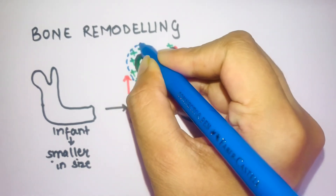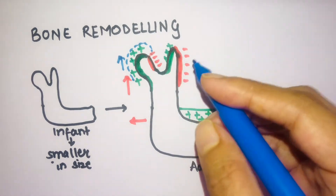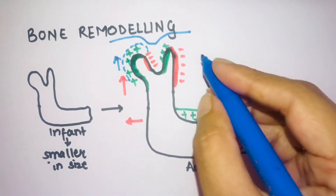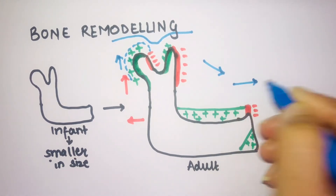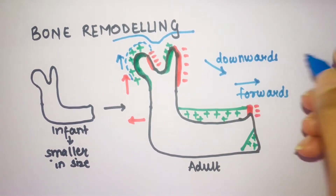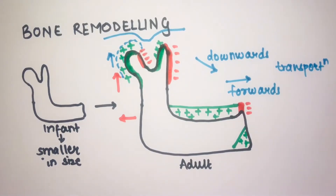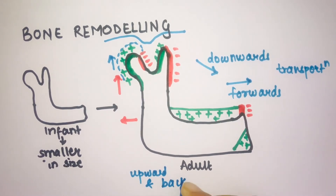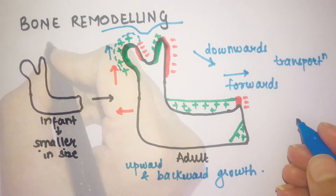Deposition of bone at the condylar head makes it grow in the upward direction. The posterior surface of the ramus also has bone deposition, causing a backward movement. To accommodate this into the cranial bone, the mandible is translated in the downward and forward direction. In short, bone remodeling involves deposition, growth in the backward and upward direction, and translation of the mandible downward and forward.